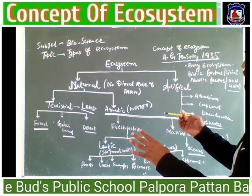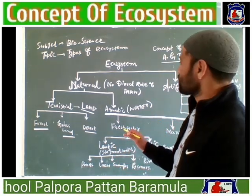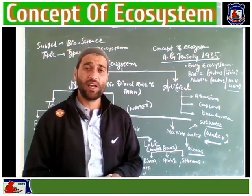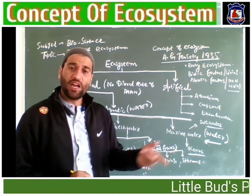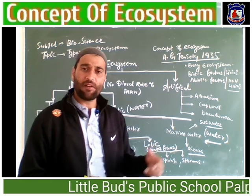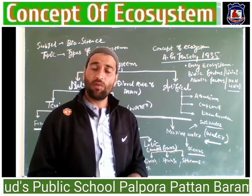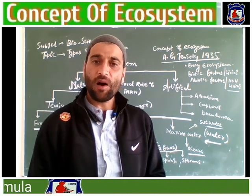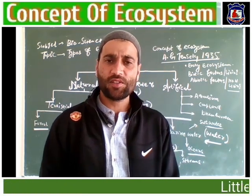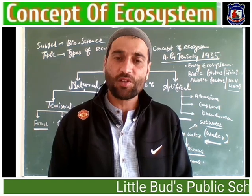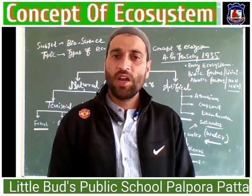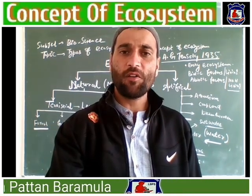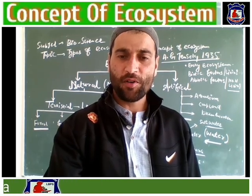Here we have covered the types of ecosystems — how many types, what natural ecosystems look like, what artificial, terrestrial, and aquatic ecosystems are. For any questions or suggestions, please drop your comment in the comment section and we will try to answer you back. Hope for the best and good luck to all my students — thanks so much for your cooperation and support.